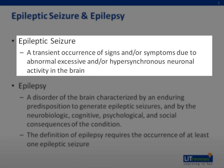An epileptic seizure is the result of abnormal excessive activity of neurons in the brain. There may also be abnormal synchronization of neuronal activity. This results in various physical, sensory, and other non-physical manifestations, which we will discuss later.